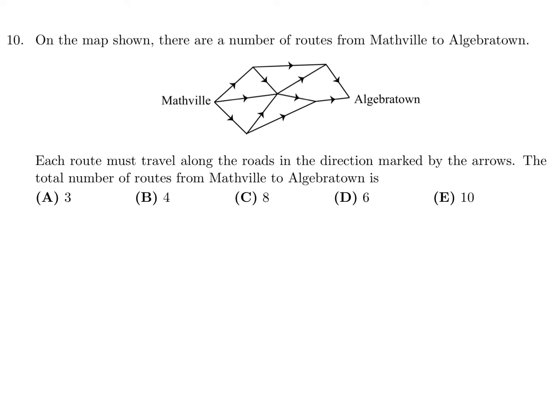On the map shown, there are a number of routes from Mathville to Algebra Town. Each route must travel along the roads in the direction marked by the arrows. The total number of routes from Mathville to Algebra Town is... So what I did was I just labeled each route by a letter. So A, B, C, D, E, G, H, I, J, and there's K up here.